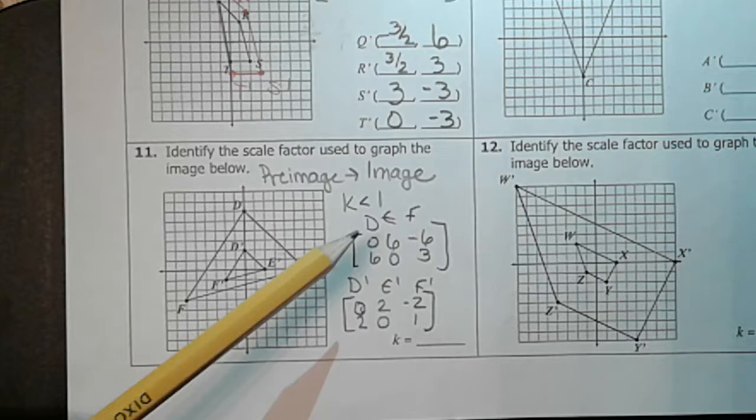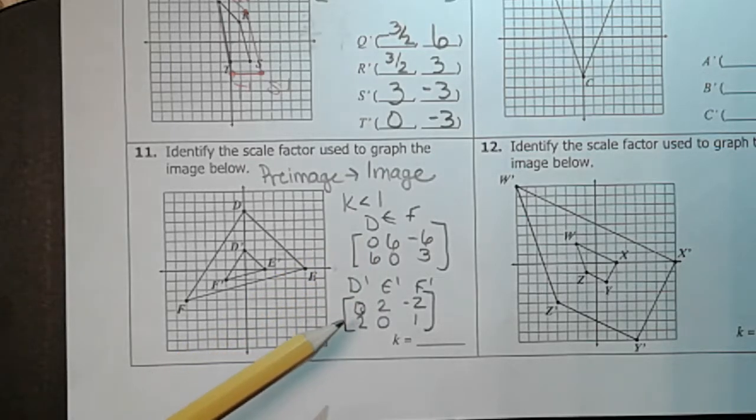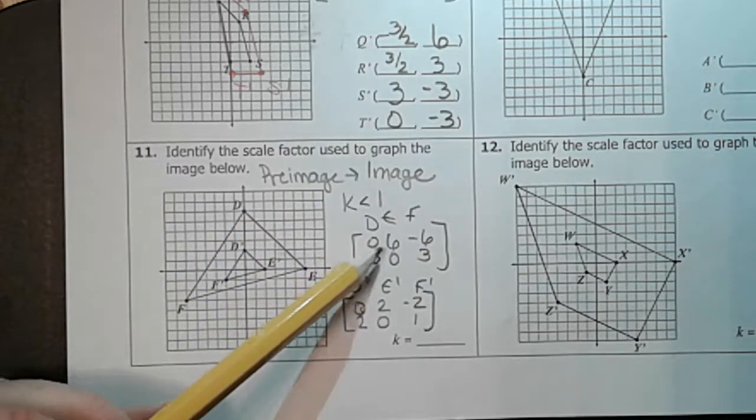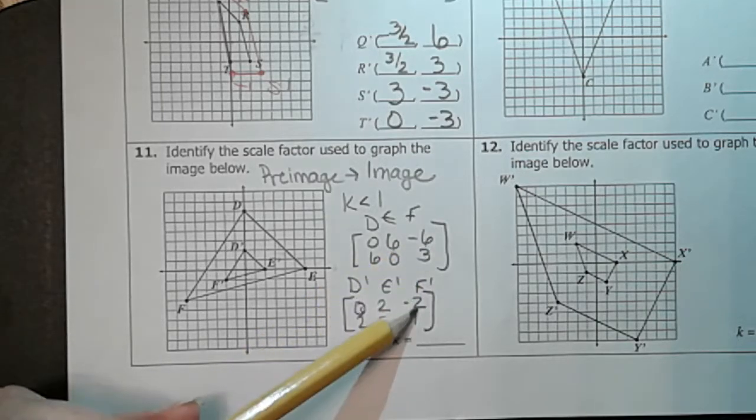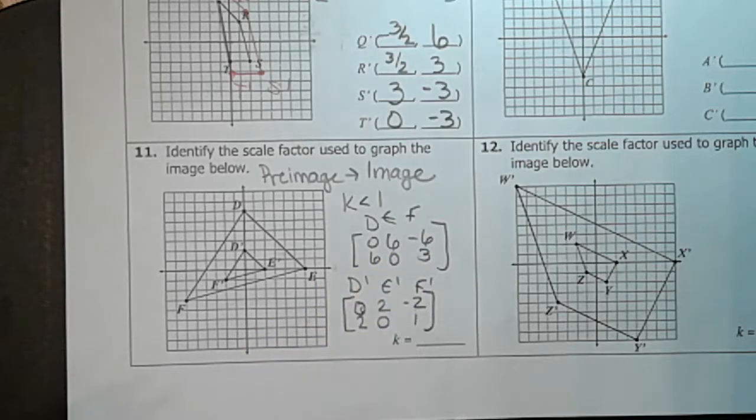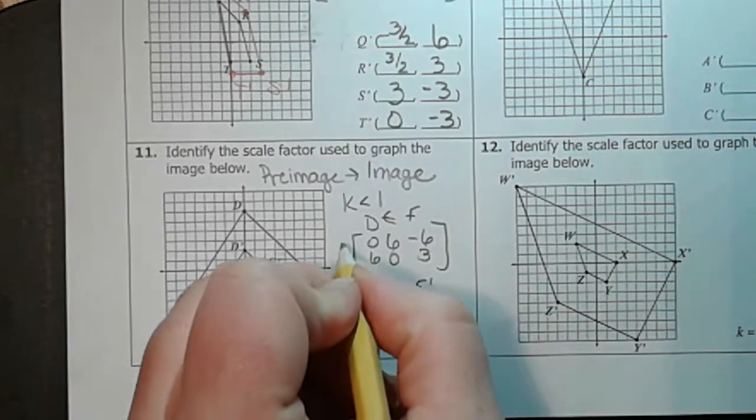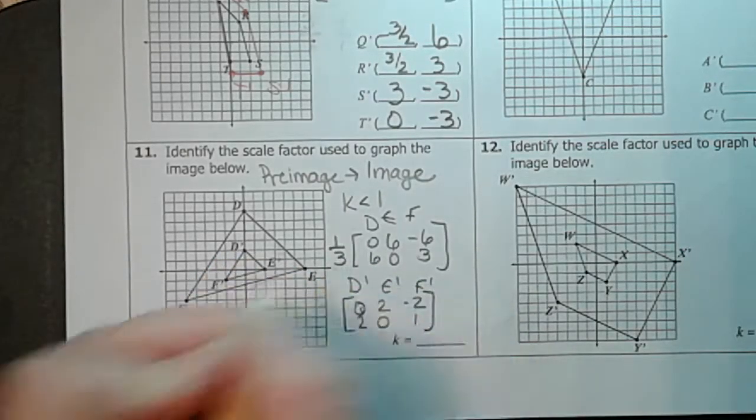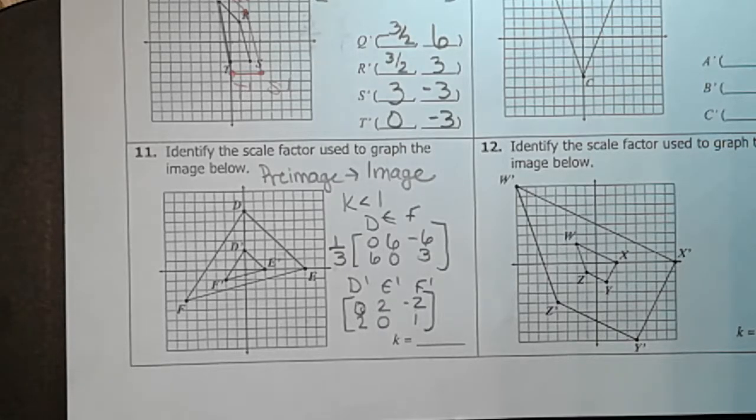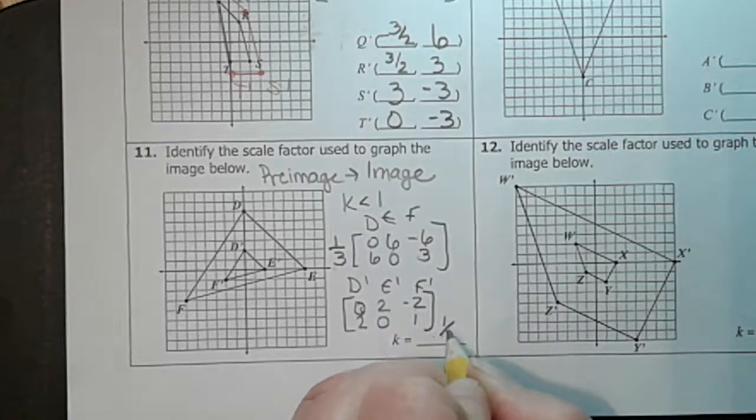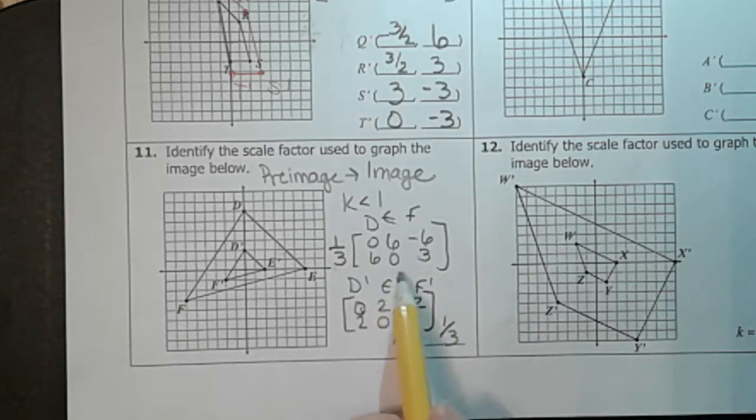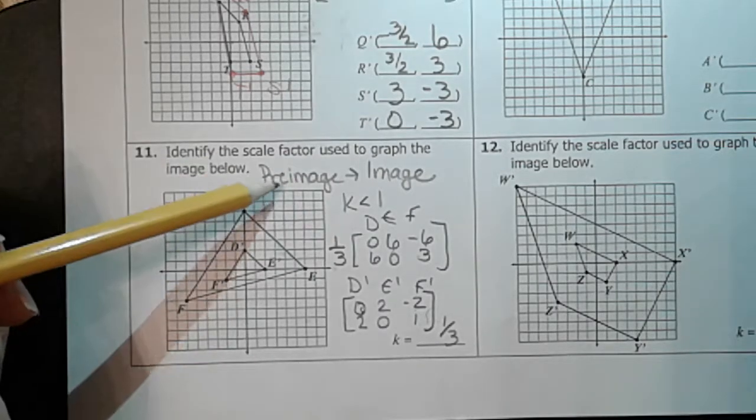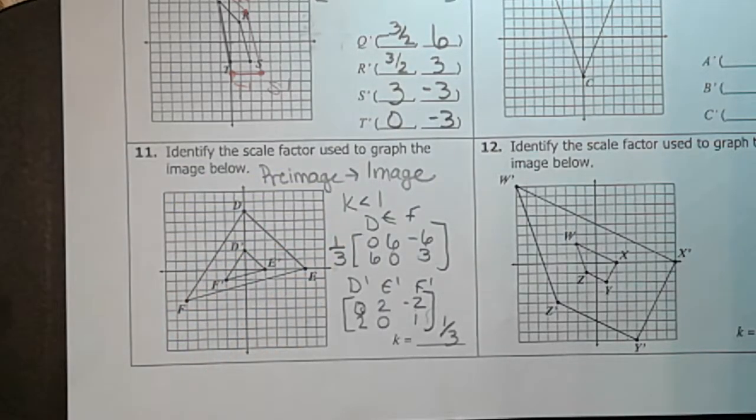So let's look at these numbers. How did we get from here to here? To get from six to two, we divided by three. To get from six to two, we divide by three. Negative six to negative two, divided by three. Three divided by one is three. So how do you write that as a fraction? Well, to divide by three, that's like multiplying by one-third. So our scale factor here is one-third. If you multiply each one of these by one-third, you're going to get these. So our K value is one-third, and if you look, we decided that it should be less than one, and it is.